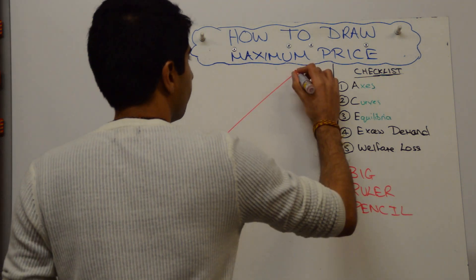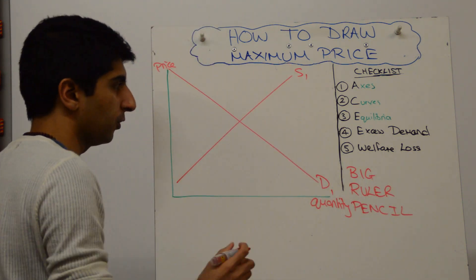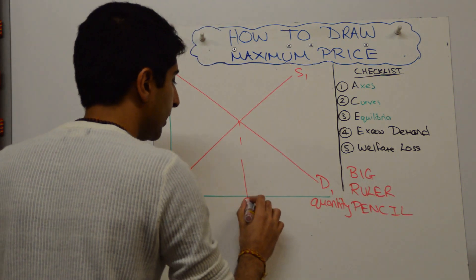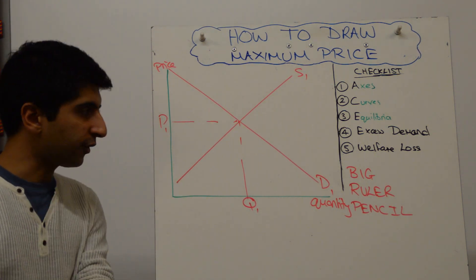Then draw your demand and supply curves, and label them. So D1 and S1, make sure it's properly labeled. Label your equilibrium. We have a simple market there, good stuff.